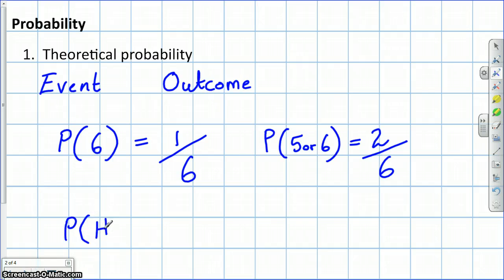What about flipping a coin? What, for instance, is the probability of a head? Well, there's one outcome we want out of a total of two outcomes. Theoretical probability, where we assume that each of the outcomes is equally likely.